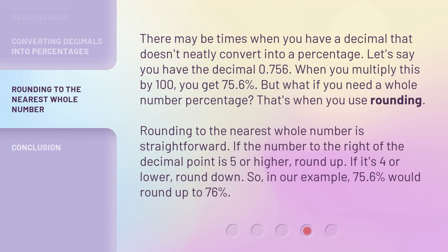There may be times when you have a decimal that doesn't neatly convert into a percentage. Let's say you have the decimal 0.756. When you multiply this by 100, you get 75.6%. But what if you need a whole number percentage? That's when you use rounding.